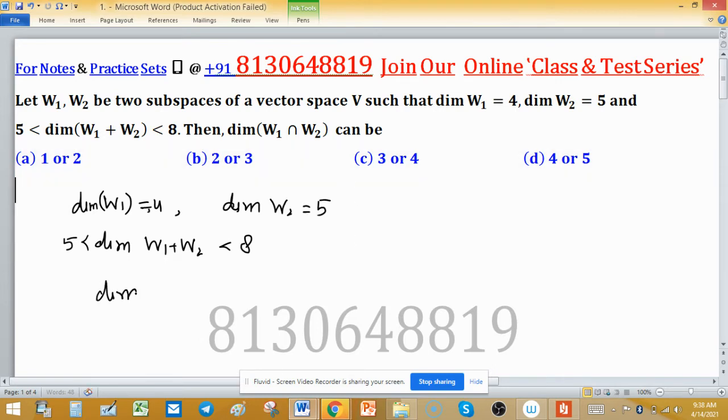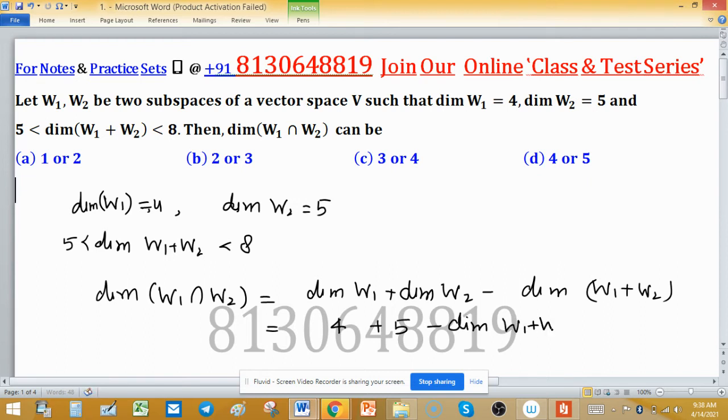We know the rule: dimension of intersection is equal to dimension of W₁ plus dimension of W₂ minus dimension of W₁ plus W₂. This is the rule, or you can say formula. As dimension of W₁ is 4, dimension of W₂ is 5, minus dimension of W₁ plus W₂.